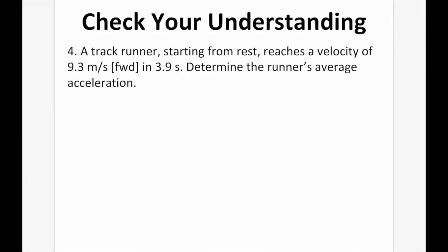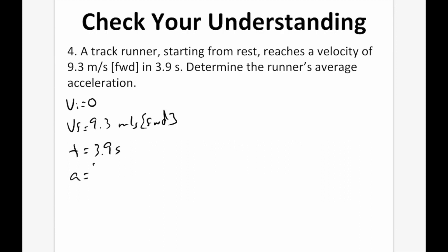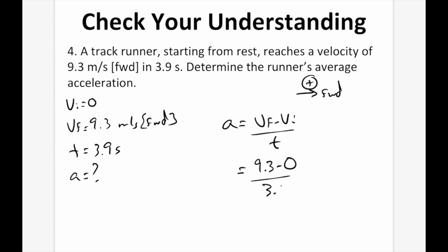Question 4: a track runner starting from rest reaches a velocity of 9.3 m/s forward in 3.9 seconds. Determine the average acceleration. Taking forward as positive, vi = 0, vf = 9.3 m/s, t = 3.9 s. a = (9.3 − 0)/3.9 = 2.38 m/s². Rounding to two significant digits, the final answer is 2.4 m/s² forward.